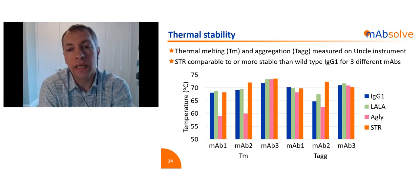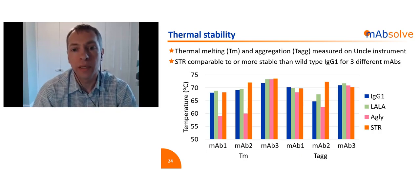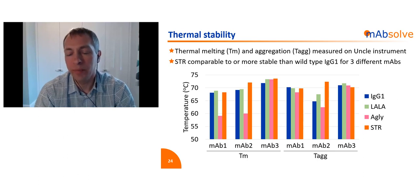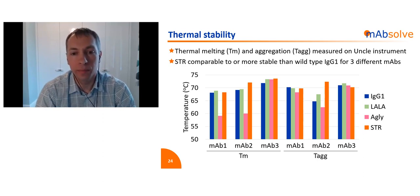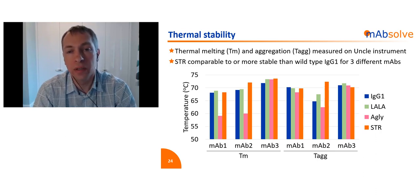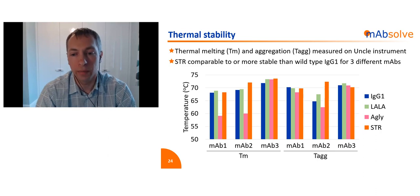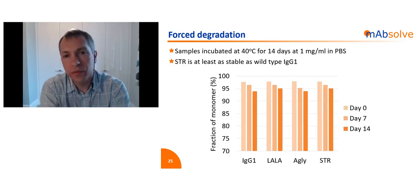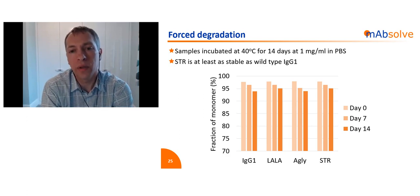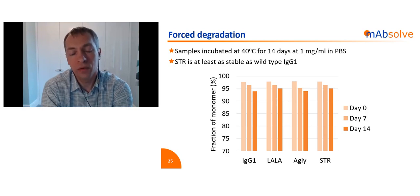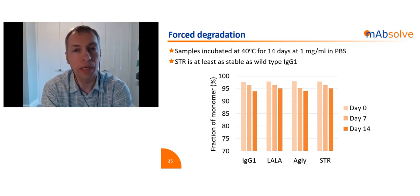We've looked at thermal stability and aggregation for three different antibodies with three completely different sets of variable domains. STR is always at least as stable, if not more stable than wild-type IgG1. This slide also shows the significant decrease in stability you often see with aglycosylated antibodies. In a forced degradation study — antibodies held at 40 degrees for two weeks at 1 mg per mL in PBS, analyzed by SEC-HPLC to monitor aggregates — all variants perform pretty equally, with STR maybe slightly more stable than wild-type IgG1.